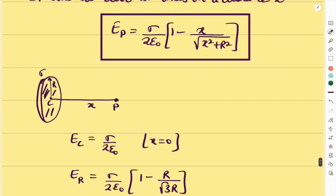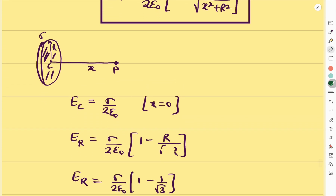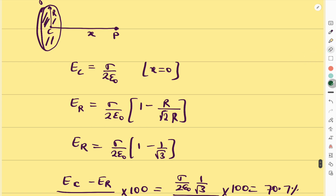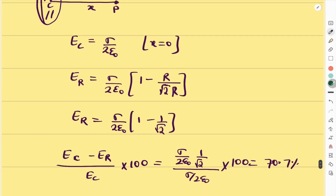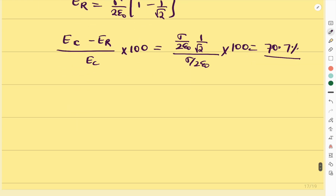For the second type, we set x = R. Substituting into the formula: R/√(R² + R²) = R/√(2R²) = 1/√2. To find the percentage reduction: (E_center − E_R)/E_center × 100%. The σ/(2ε₀) cancels, leaving 1 − 1/√2, which gives approximately 29.3% remaining, meaning the electric field is reduced by 70.7%.